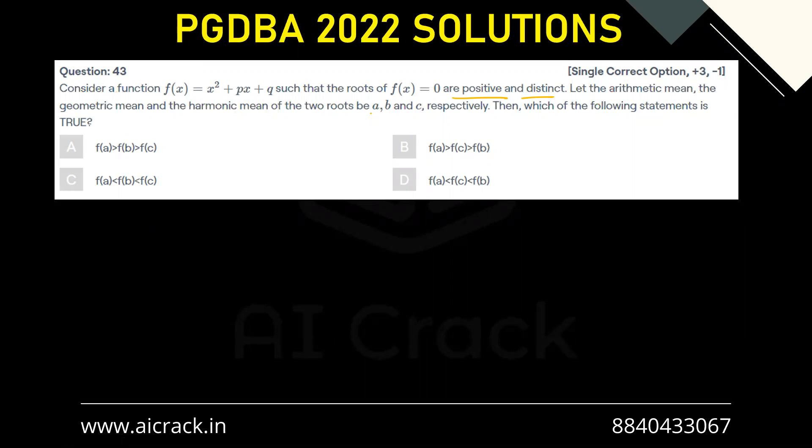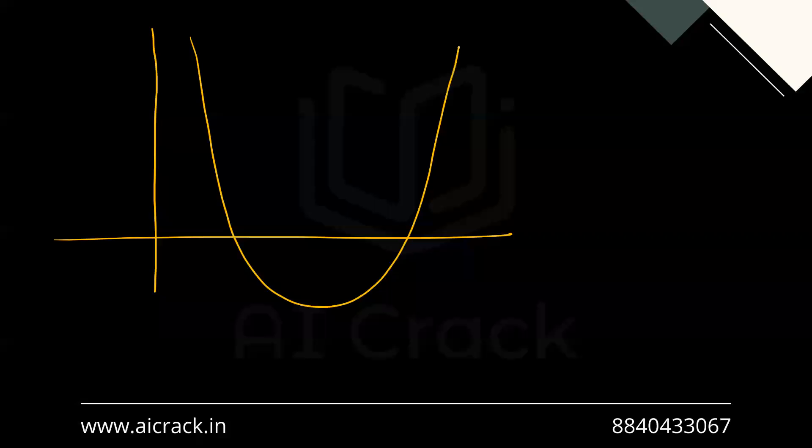Now the main thing to notice here is the roots are positive and distinct, so let's try to plot the graph. This is our origin and both the roots should be on the right side because both are positive and distinct. So this is how our parabola looks like.